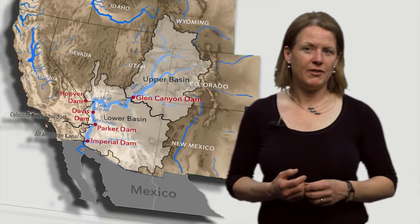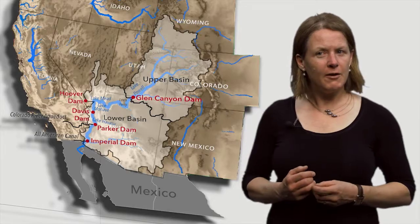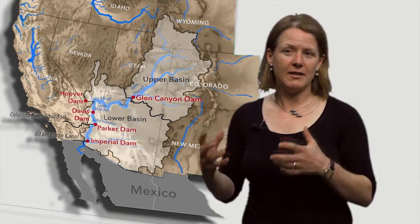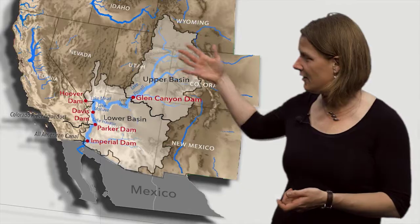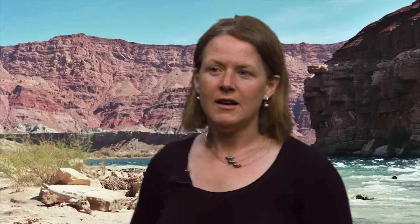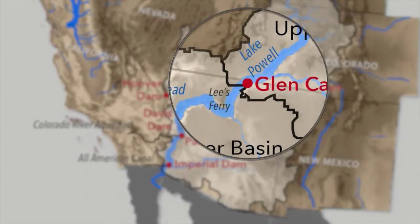For water management purposes, the Colorado River Basin is divided into an upper basin and a lower basin. The dividing line between the two basins runs through Lee's Ferry, an important river crossing point since the mid-1800s, just downstream from Lake Powell. Lee's Ferry is the accounting point at which the main allocation of the river's flow between the upper and lower basin is measured.